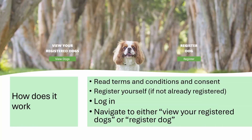So how does it work? First, you do need to read the terms and conditions and the consent form for the data to be used in the machine learning algorithm. You need to register yourself if you're not already registered, then log in, and then you navigate to either view your registered dogs or register a new dog.